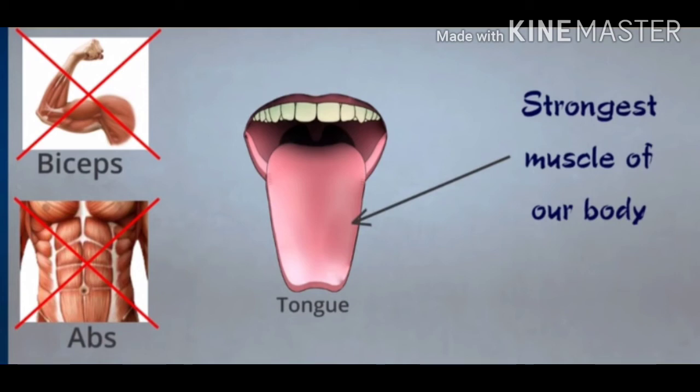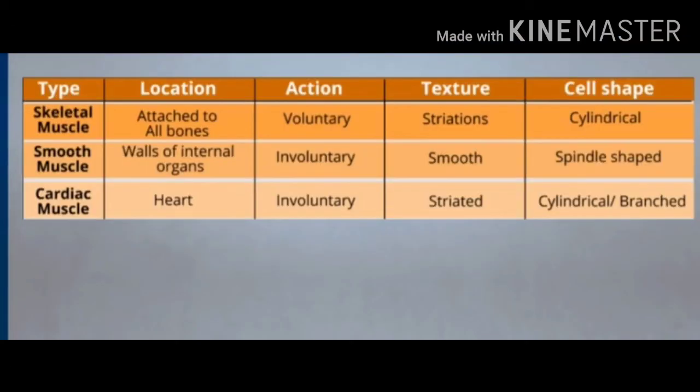Here is the summary of what we discussed about muscular tissues — skeletal muscles, smooth muscles and cardiac muscles — along with their location, action, texture and shape. The diagrams are also given in your textbook.